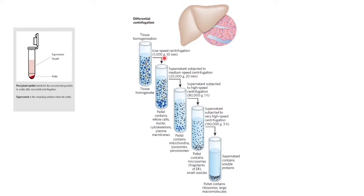1000 g, g stands for gravity. This tube will be kept for centrifugation at low speed. After 10 minutes, you will get large particles which are settled at the bottom of the tube, whereas small particles will be present above. This is the pellet and the pellet contains whole cells, nuclei, cytoskeleton, and plasma membrane.